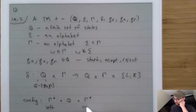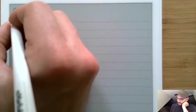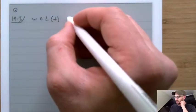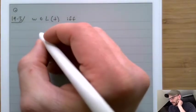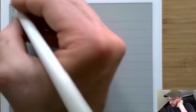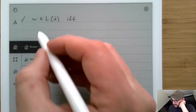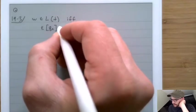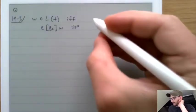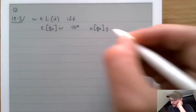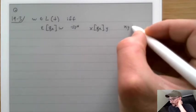These are the things to the left, these are the things to the right. W is inside of the language of some Turing machine T if and only if, starting from the configuration epsilon, q0, w, and running for a while, we end up with x, qA, y, where x and y are inside of Gamma star.